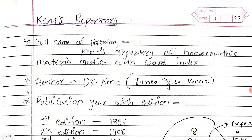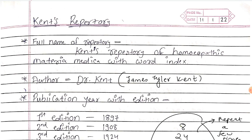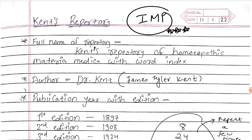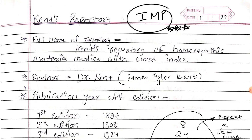Today the first topic which we will be studying and revising for the exam is the Kent's Repertory. As we all know, Kent's Repertory is one of the most important repertories in our portion and it is also one of the most important foundation bases of our practice. People who are thorough with Kent's Repertory tend to do better in practice and are able to find symptoms of the patient better in the repertory. Now let us look in detail at what points we should cover for a 20-marker answer.